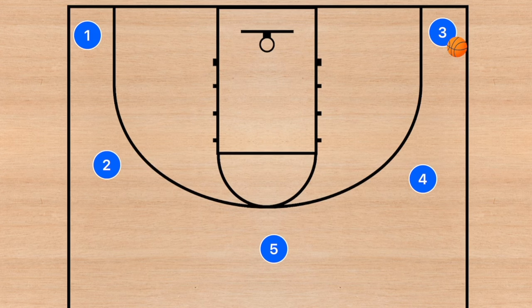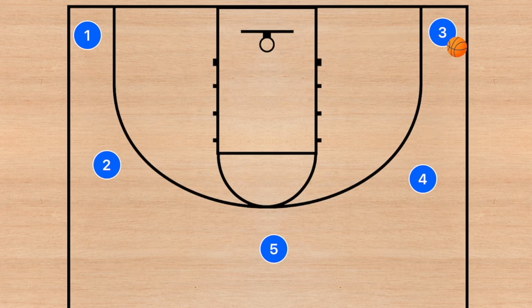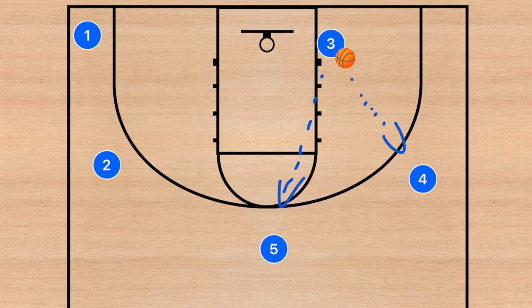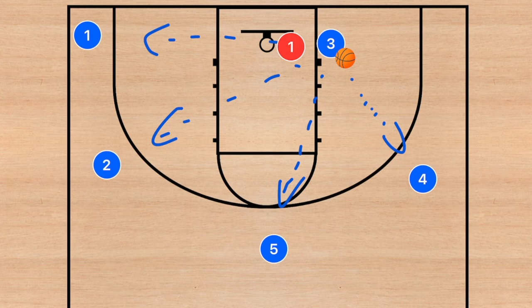Player three needs to either pass up to player four or drive to the rim himself. If he drives to the rim, he now has four options: he can pass out to player four, player five, player two, or player one. He would look to pass the ball out if, for example, player one's defender comes down to play help — that will generally leave player one wide open, making it a nice clear pass.